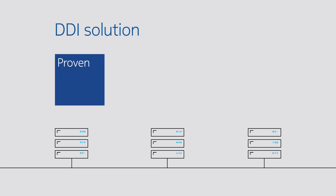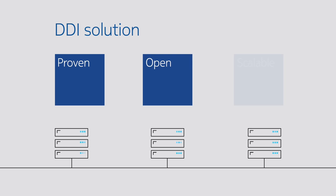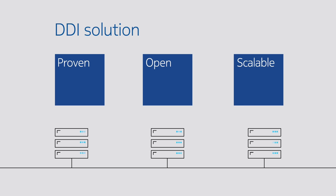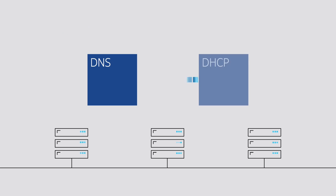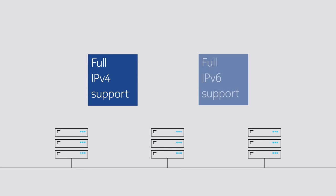Nokia Vital QIP removes the complexity and costs associated with IP address management. With industry-proven reliability, Vital QIP allows enterprises to manage hundreds of DNS and DHCP servers while supporting millions of IP addresses, providing full IPv4 and IPv6 addressing support and automation for DNS and DHCP services, allowing you to take control of your network.